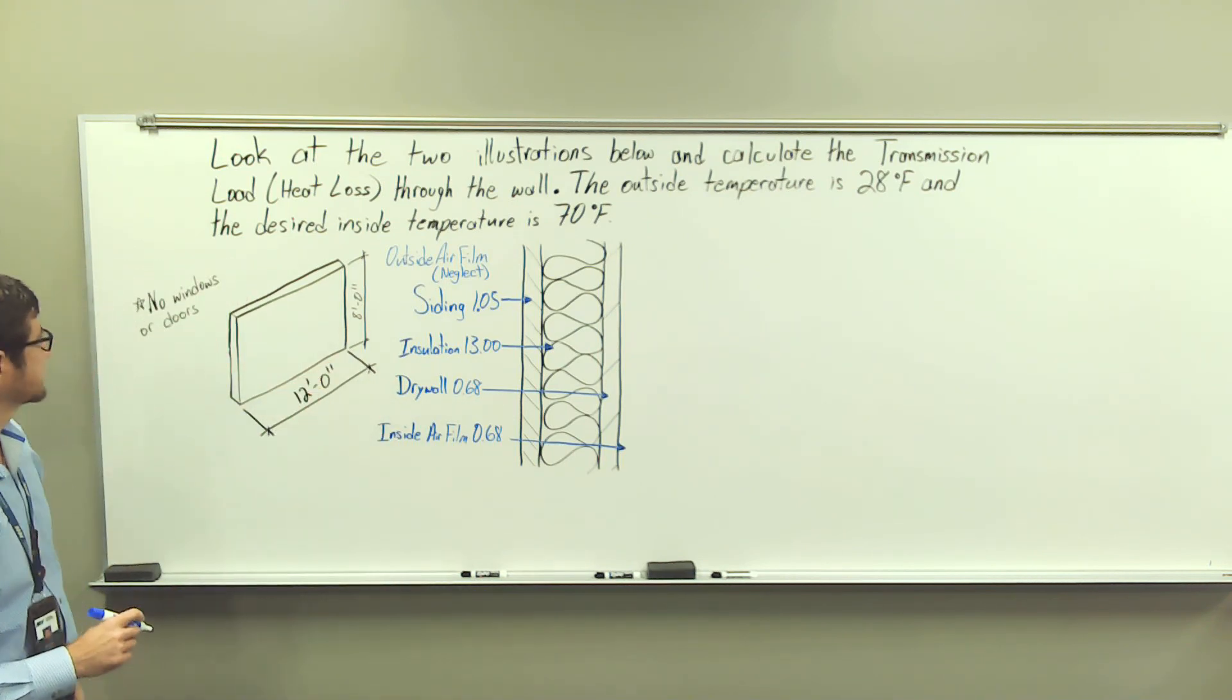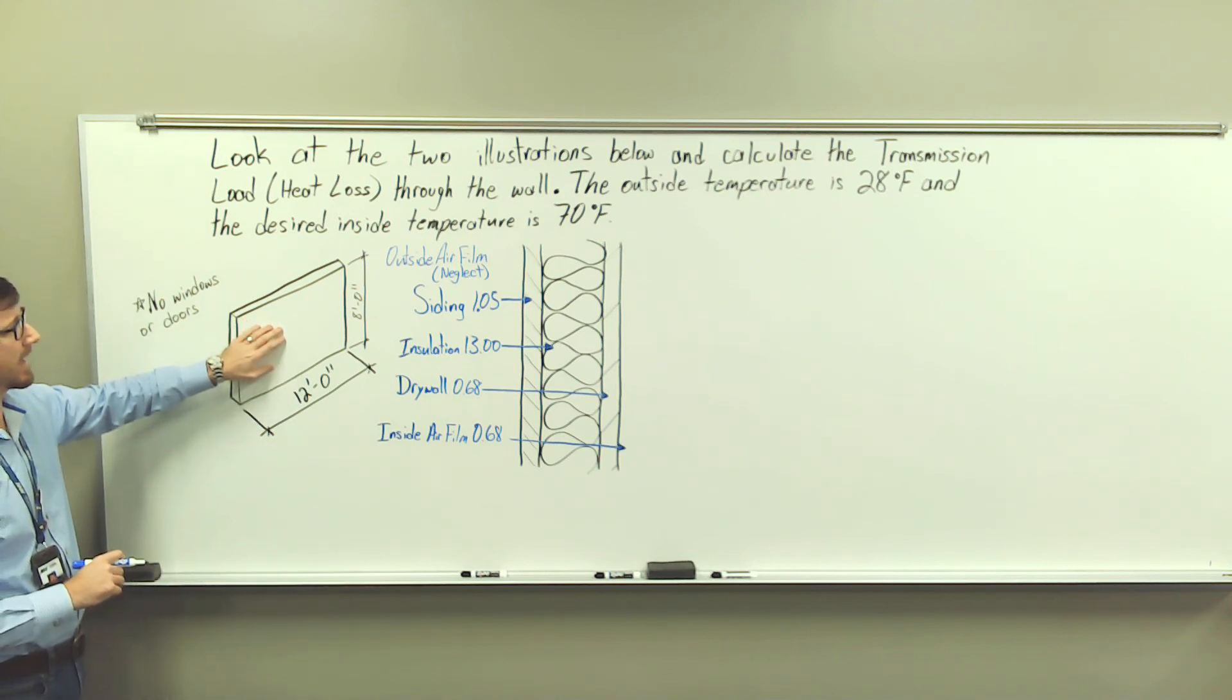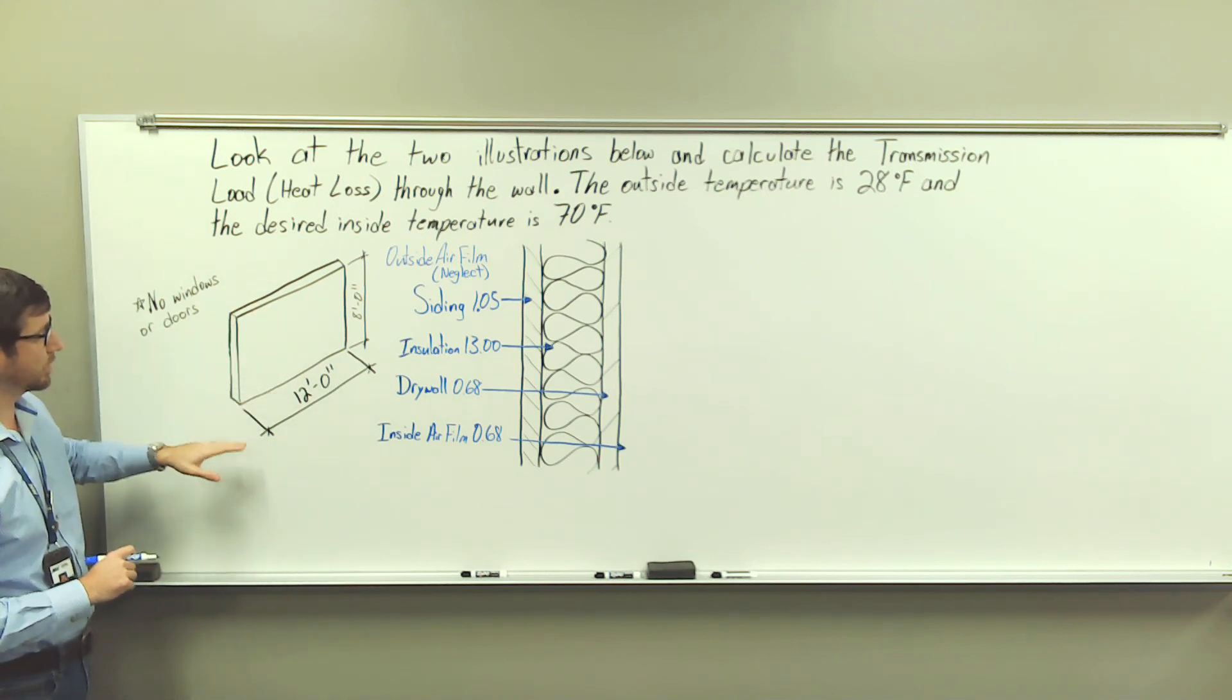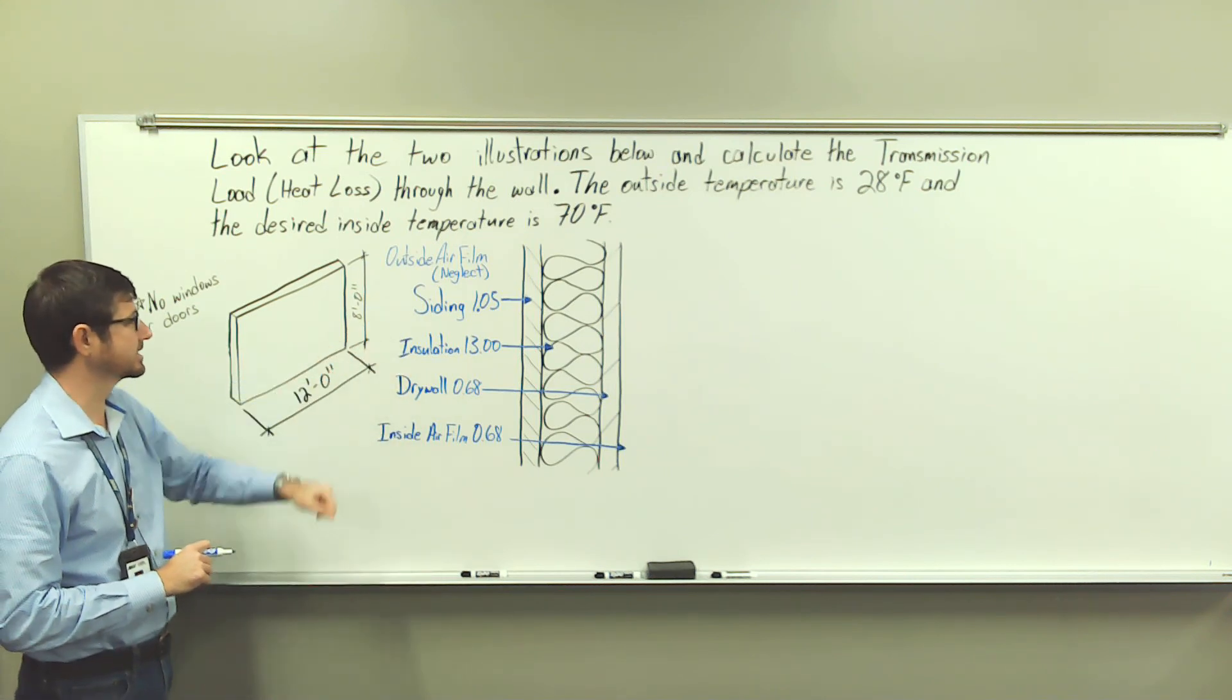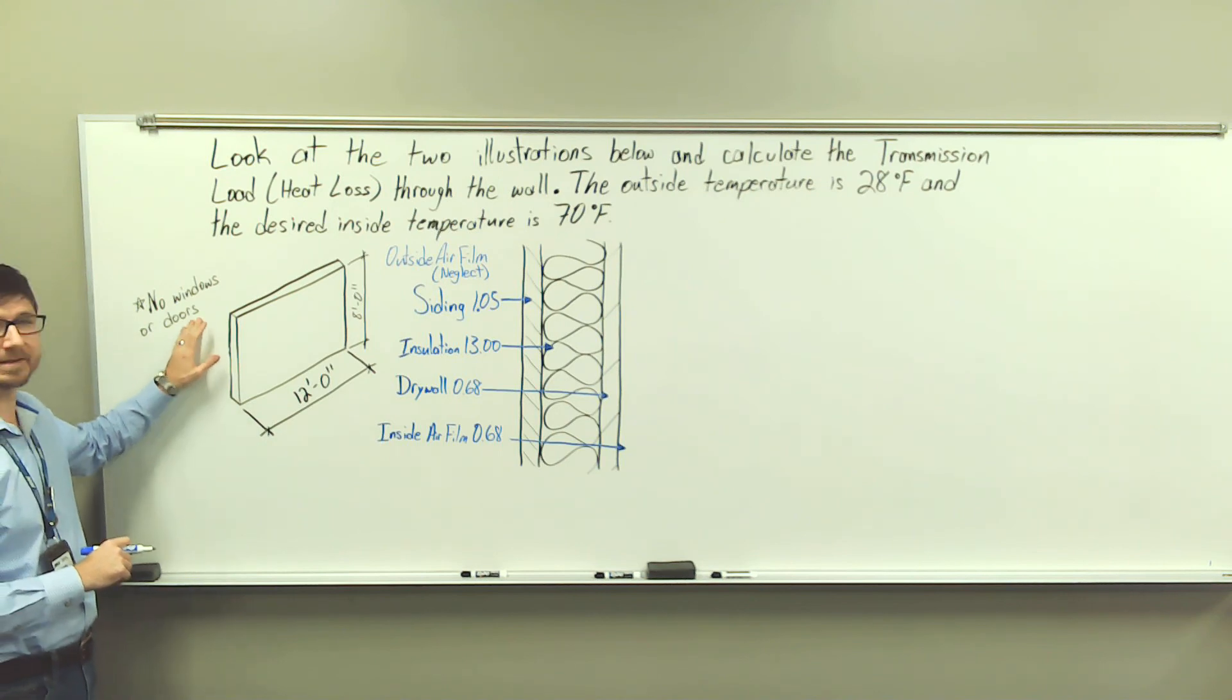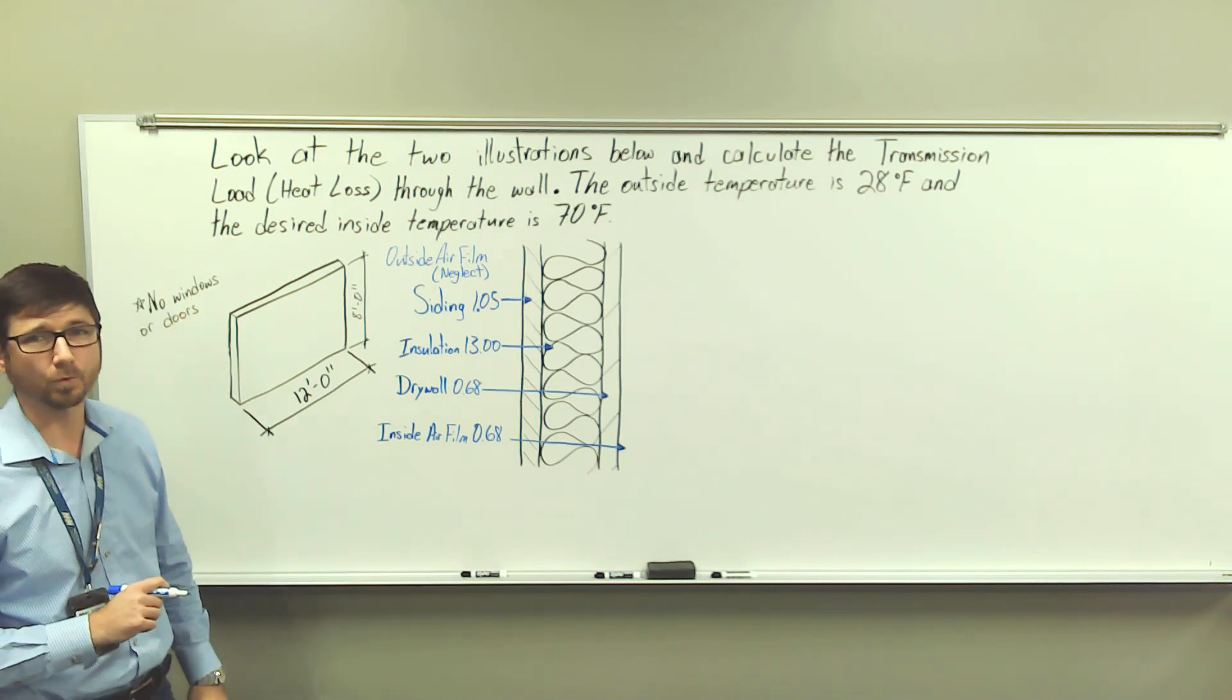And so we have two illustrations. We have a drawing that just represents the wall and the dimensions are 12 foot in width and 8 foot in height. And there's a note on the practice problems page that says there are no windows or doors.